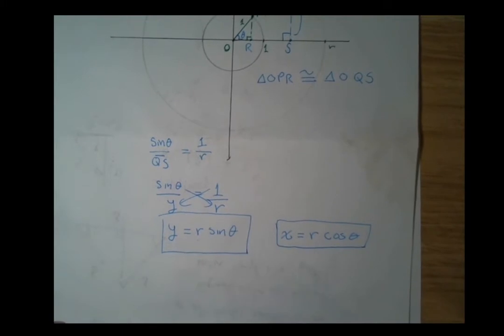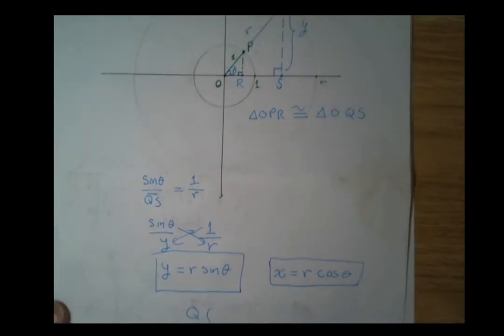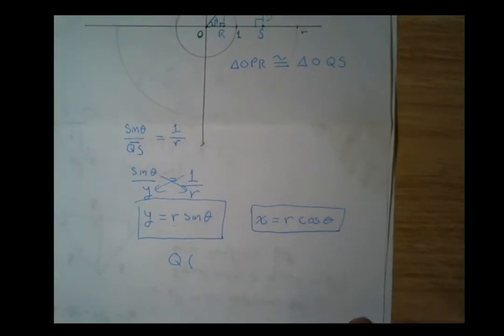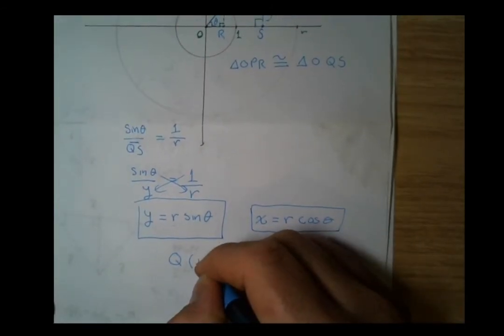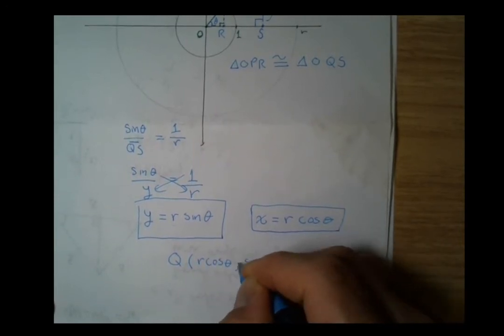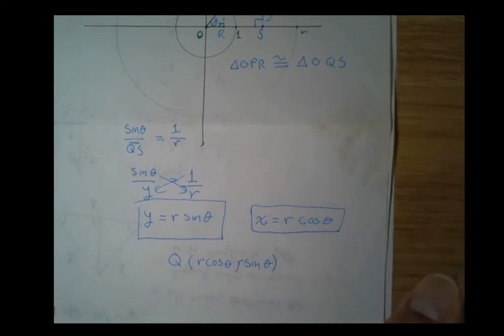Now we have a way to represent that point Q, which is not on the unit circle but on some other circle of radius r, in terms of cosine theta and sine theta. We can extend the definition of the sine and cosine functions to points outside of the unit circle.